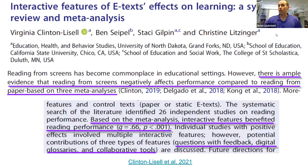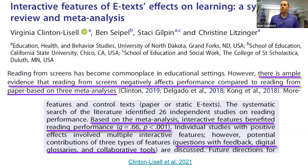I want to first go back to why. Why do these things? This is an article that came out in the last month talking about interactive features of e-texts, which a lot of what we're talking about are e-texts — they just happen to be open. One thing that's been problematic is this sentence: there's ample evidence that reading from screens negatively affects performance compared to reading from paper. This is based on three meta-analyses. However, this meta-analysis looked at interactive features. If you start to add features to that electronic resource, you can start to actually increase reading comprehension. Based on the meta-analysis, interactive features benefited reading performance, and it's a significant effect.